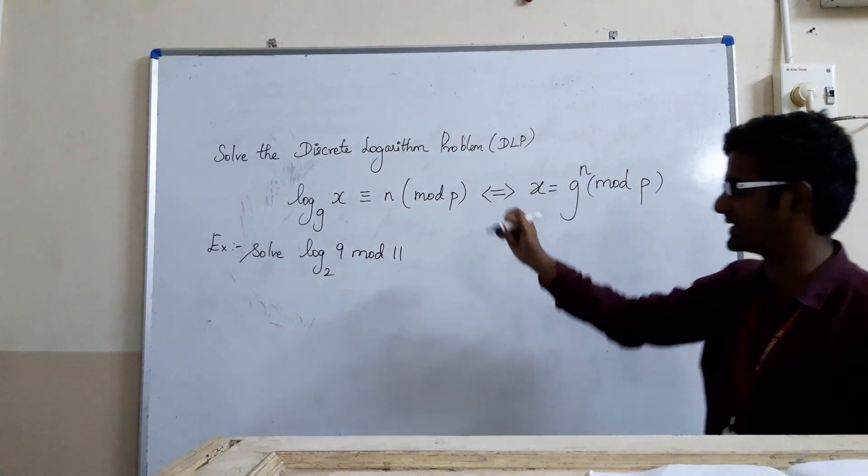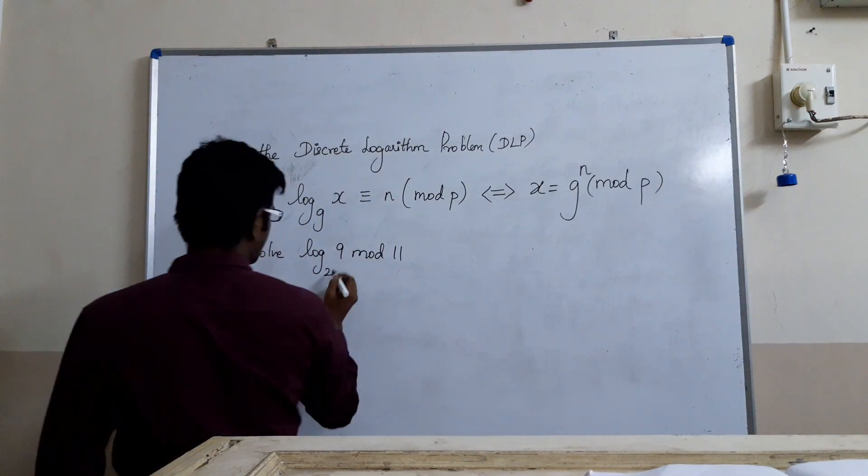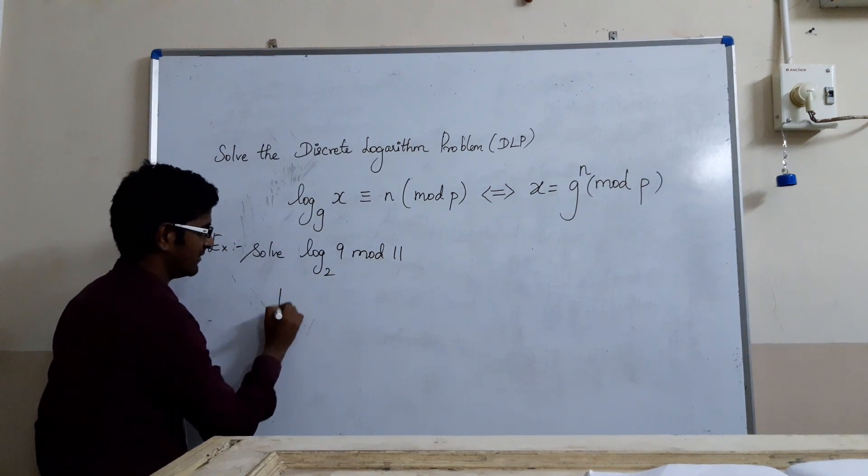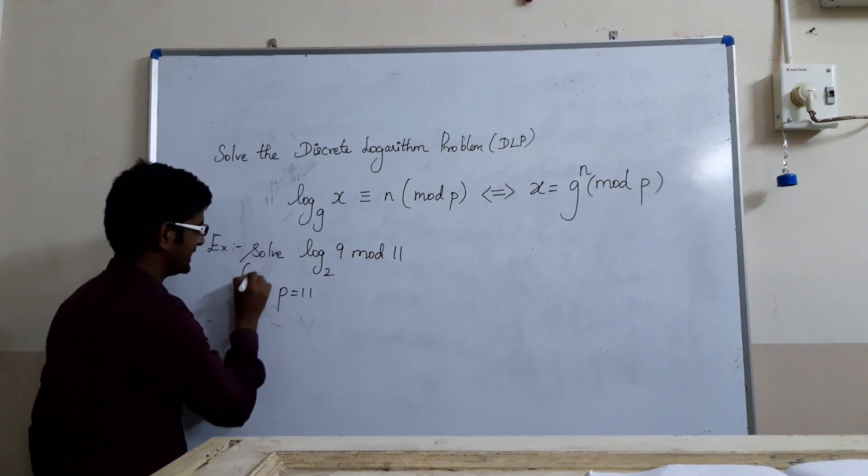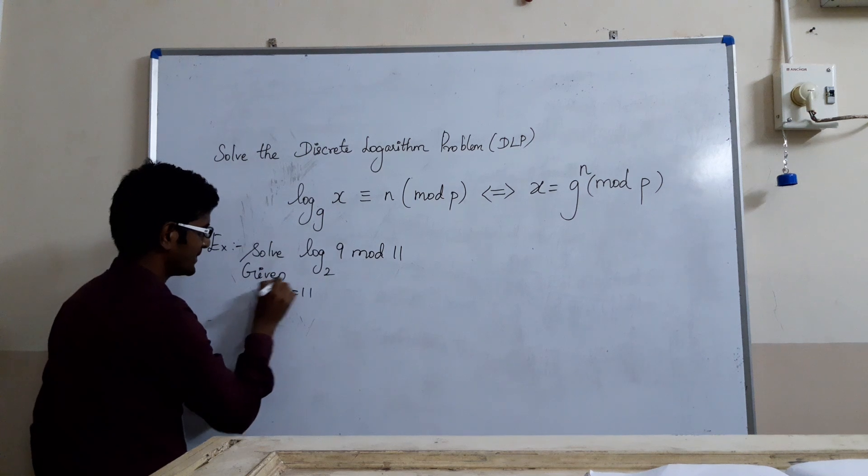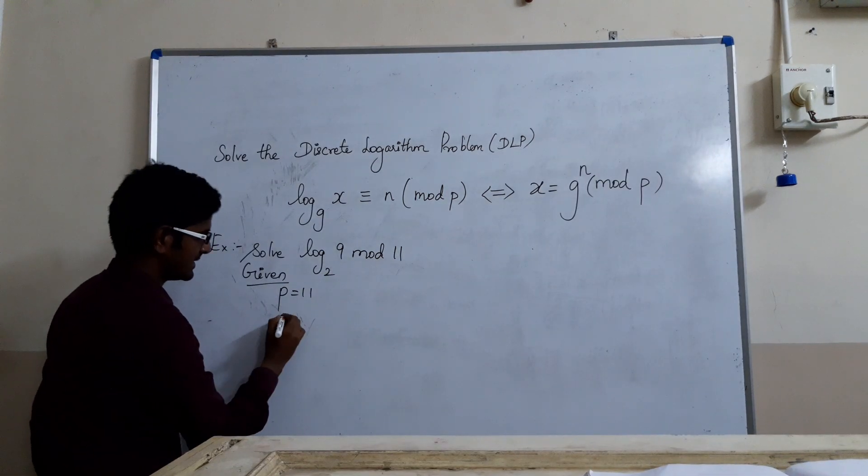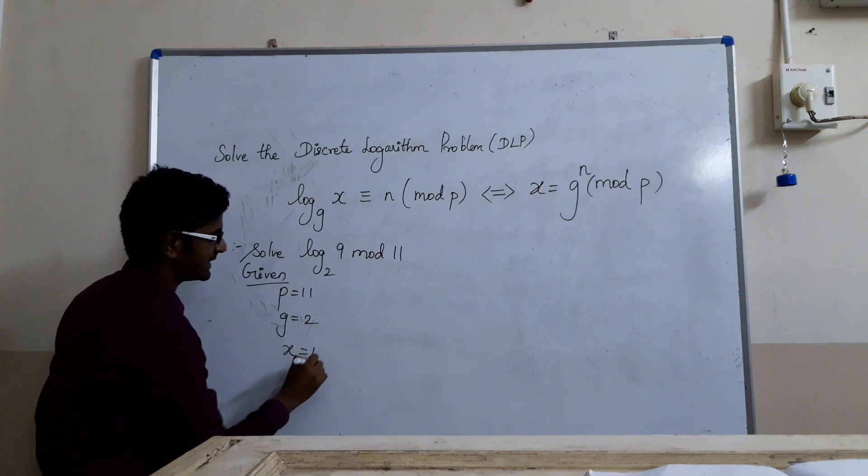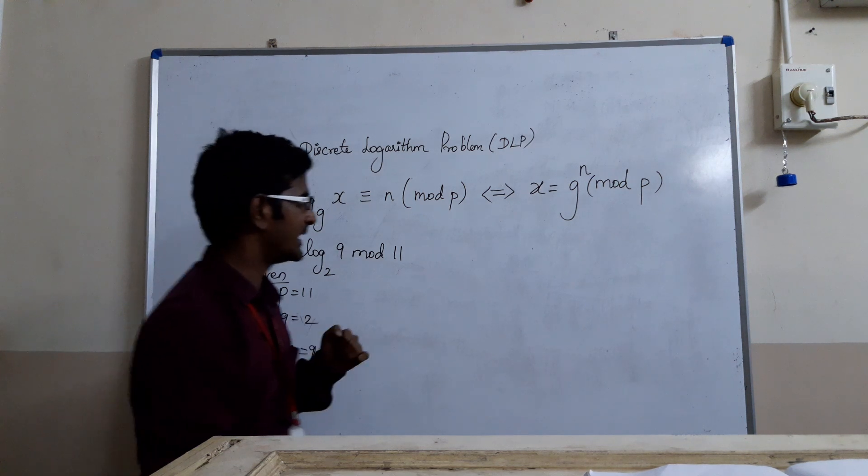We shall see how to solve this. For example, log base 2 of 9 mod 11. Here, the prime number p is 11. So we have: given p = 11, the generator g = 2, and the value x = 9.